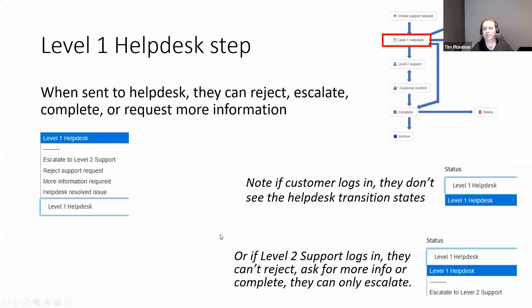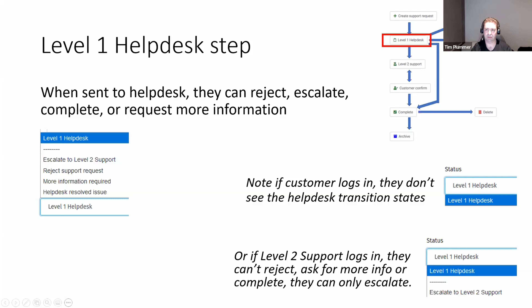The level one help desk receives it and can see the information the customer filled out. They have a choice: reject it, ask for more information, escalate to level two support, or immediately complete it if it's something they can fix quickly. When they click on the status link, they've got a lot more options and can choose which stage to transition to, then just hit save to send it off.